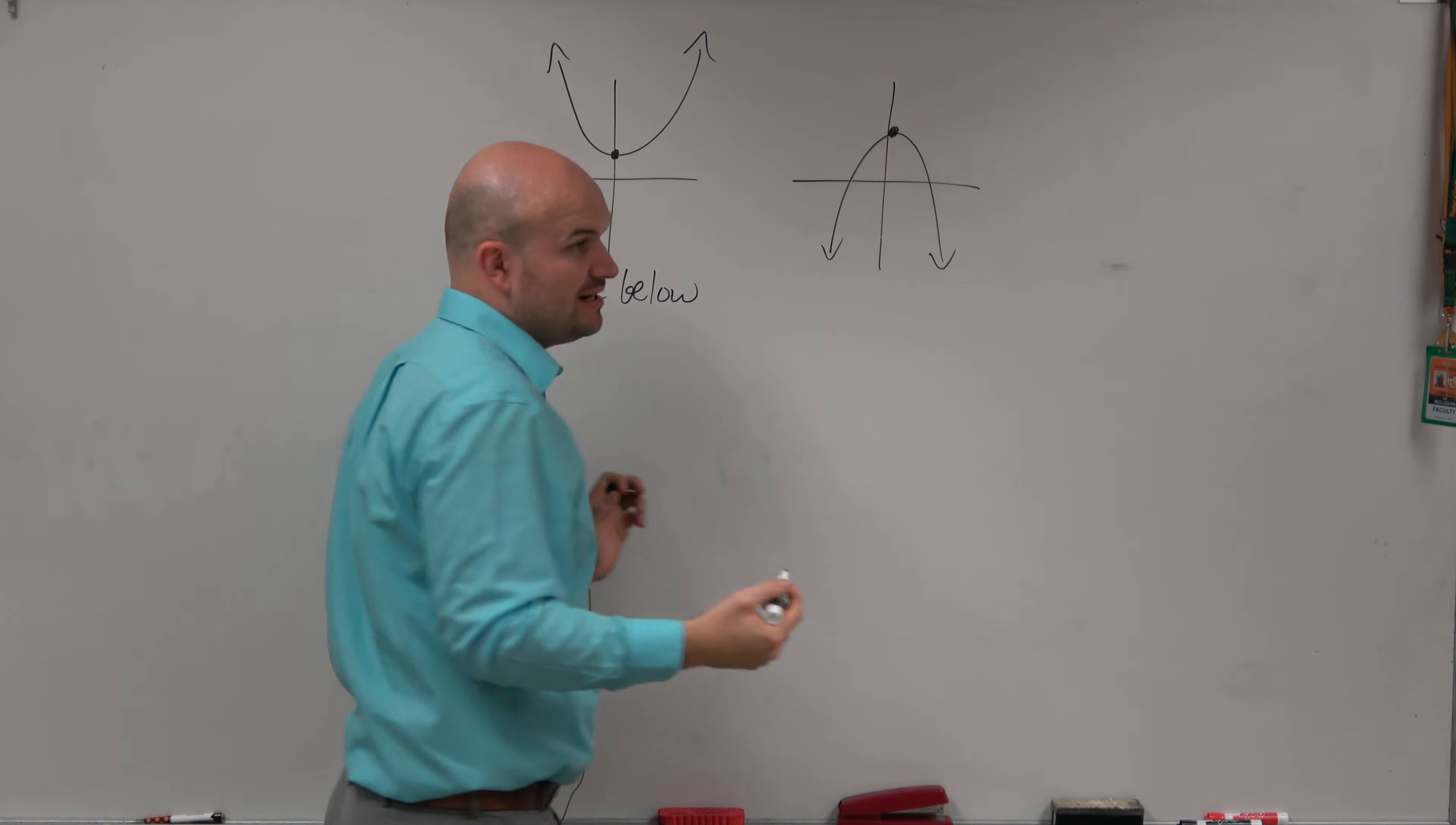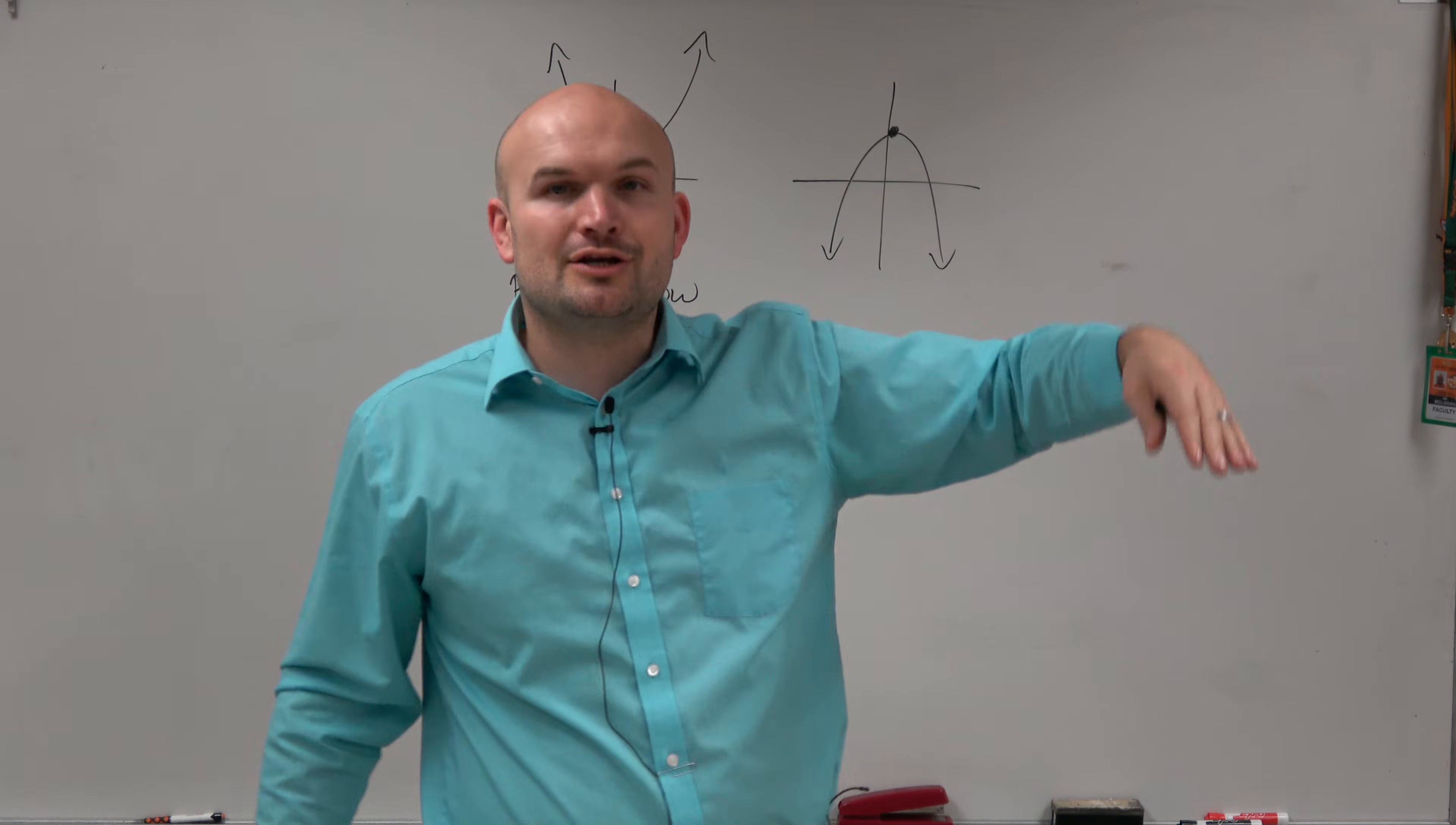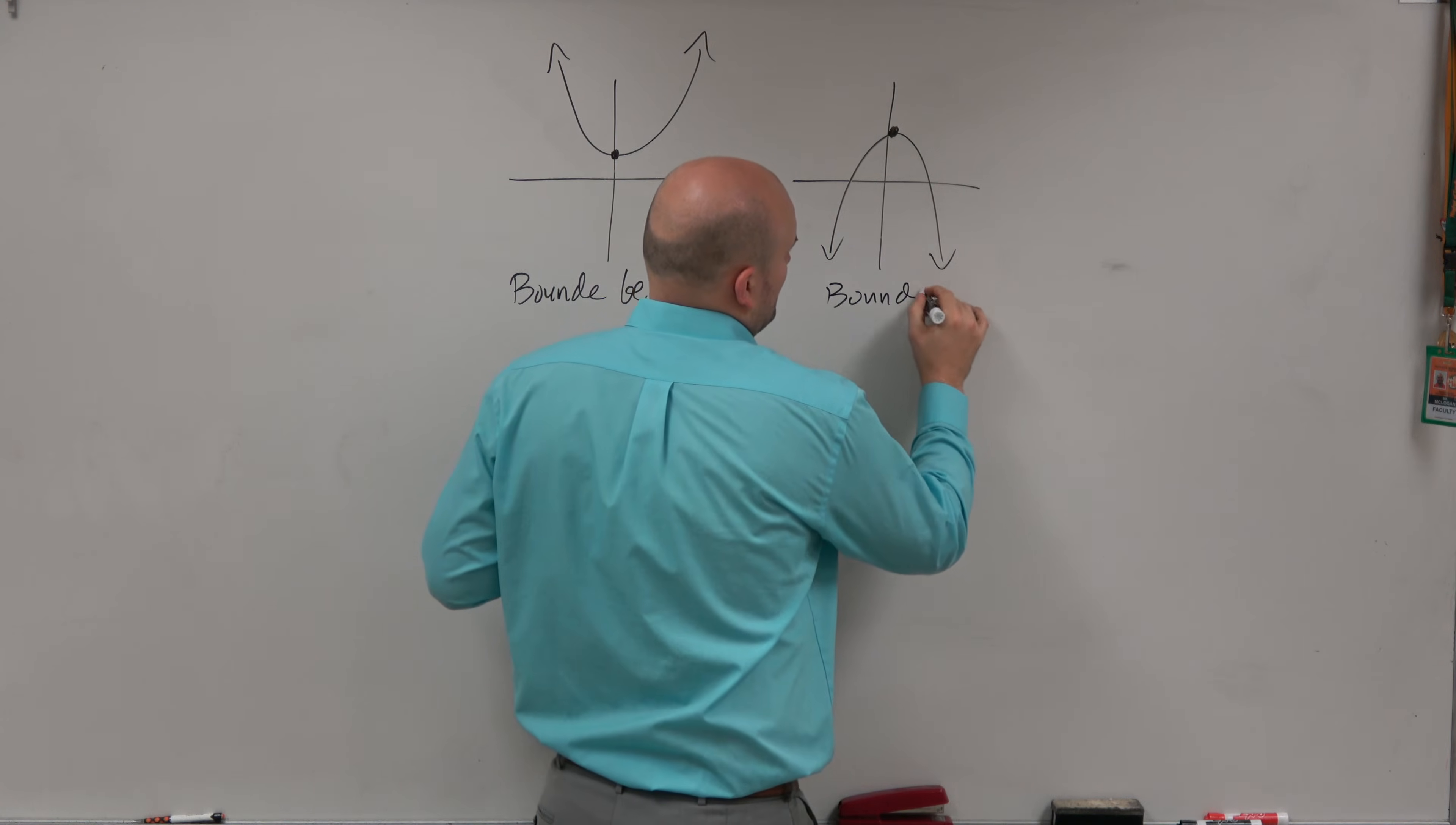Here, the graph has an absolute maximum. The graph is never going to go above that vertex, right? That is the boundary that you cannot go above. So this one is bounded above.